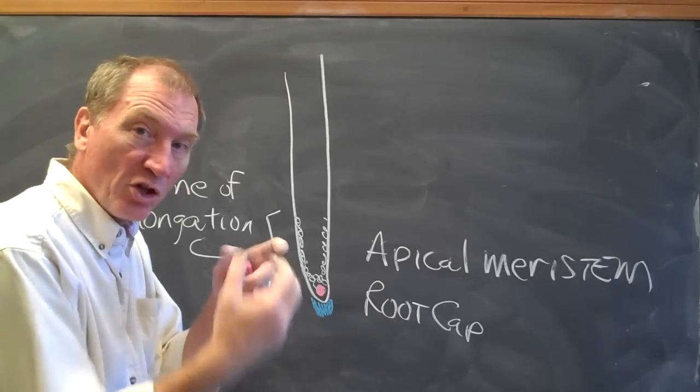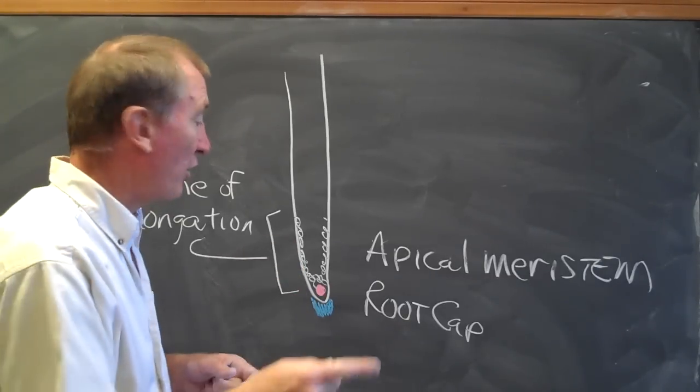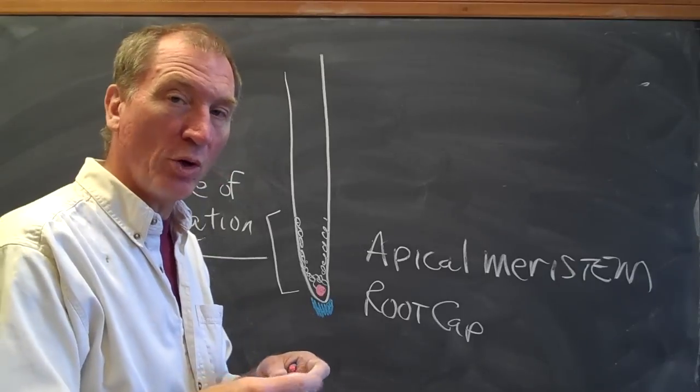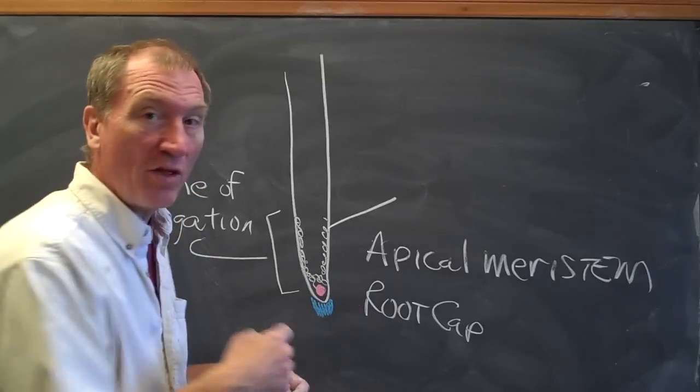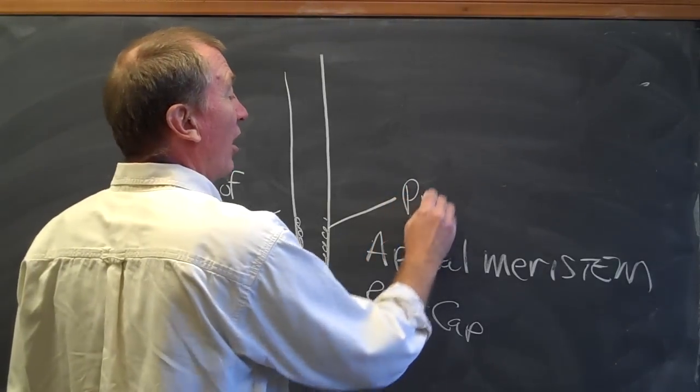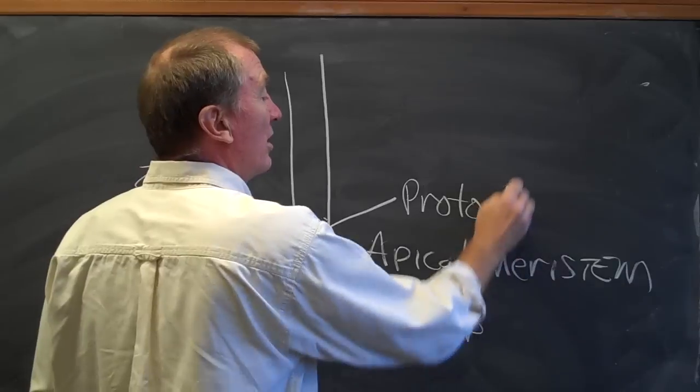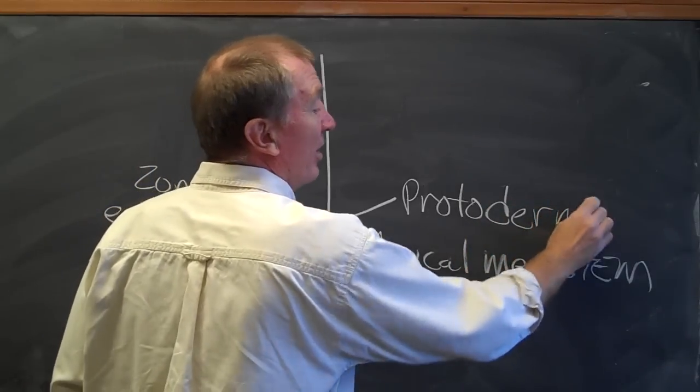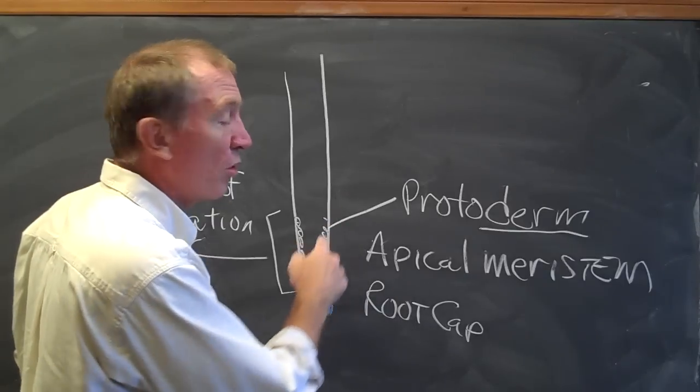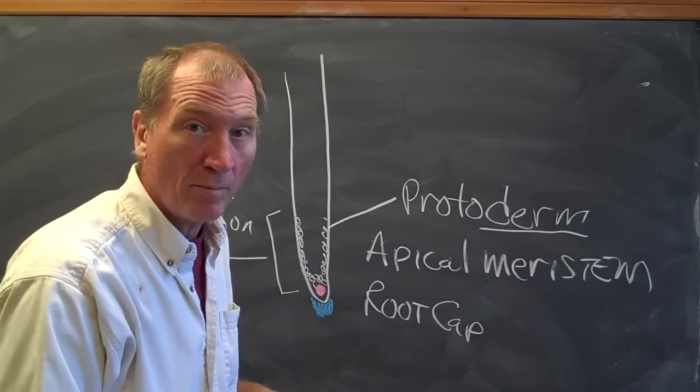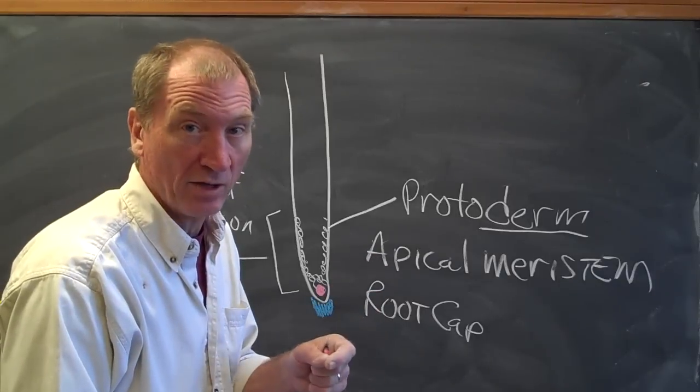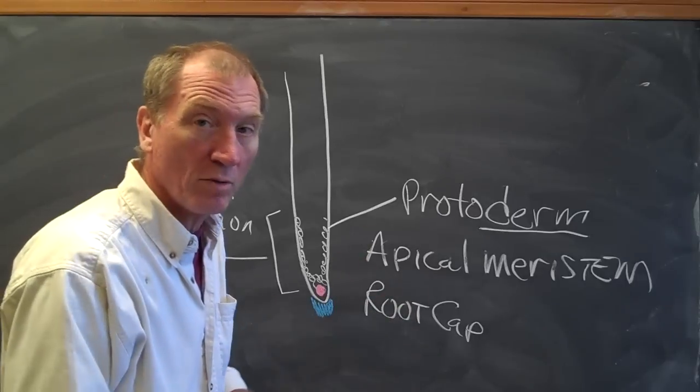Because they're new cells and they're getting larger. Now those new cells have a name depending on where they are and what they're eventually going to become. So these cells on the outside are called protoderm. Now look at that suffix, derm. So you can expect that if these are protoderm, they are going to become dermal cells once they mature. That's why they're on the outside part of the plant. They're going to become the epidermis cells.